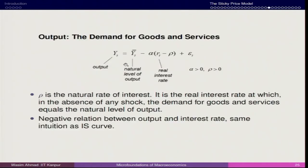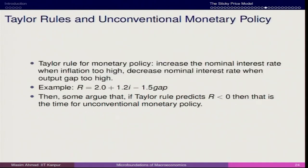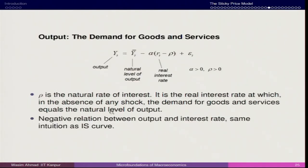This part is from Mankiw, starting with the basic premise of the Taylor Rule derivation. This equation is widely used by the Federal Reserve for its monetary policy stance. Here we have Yt as output and Yt-bar as the natural rate of output — the level the economy will achieve if everything goes well and resources are used optimally. We also have Rt as the real rate of interest, ρ (rho) as the natural rate of interest, and εt as a demand-side shock representing sudden macroeconomic changes — such as capital inflows — that create either upward or downward pressure, with mean 0 and variance 1.